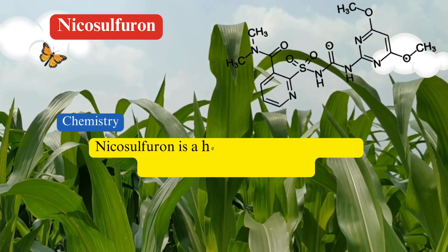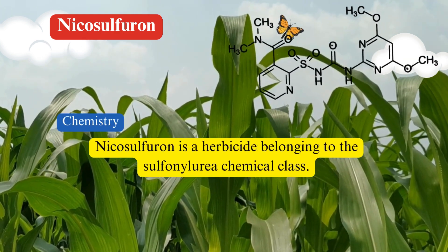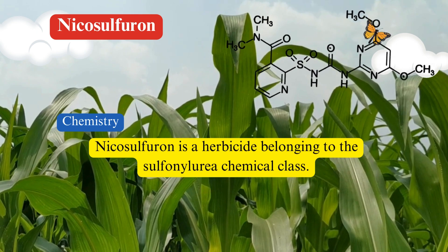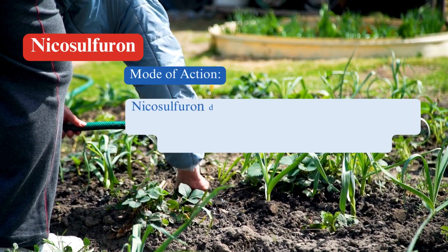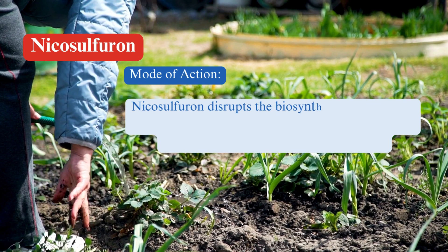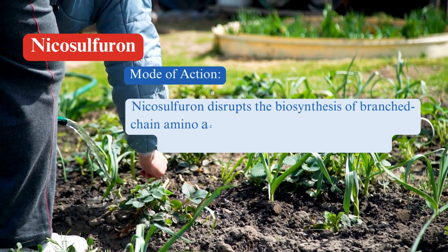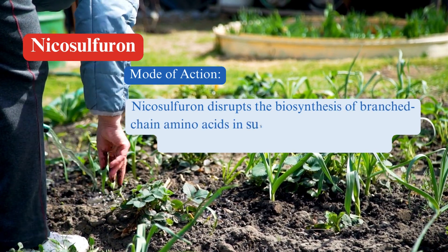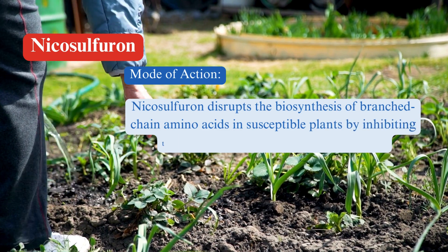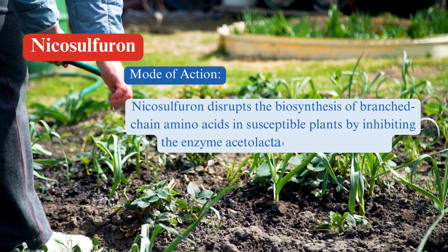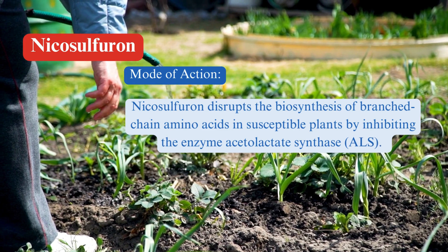Nicosulfuron is a herbicide belonging to the sulfonylurea chemical class. Its mode of action involves disrupting the biosynthesis of branched-chain amino acids in susceptible plants by inhibiting the enzyme acetolactate synthase (ALS). This inhibition leads to the cessation of protein synthesis, ultimately resulting in the death of the target weeds.